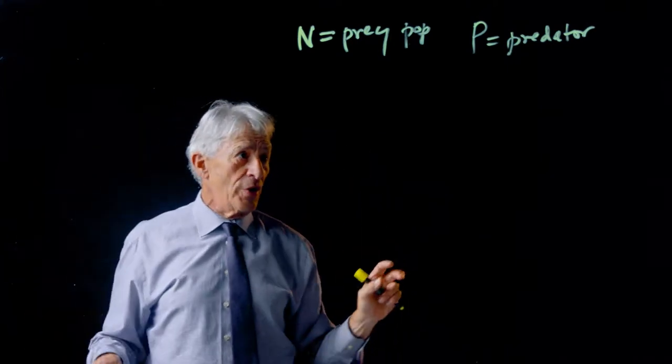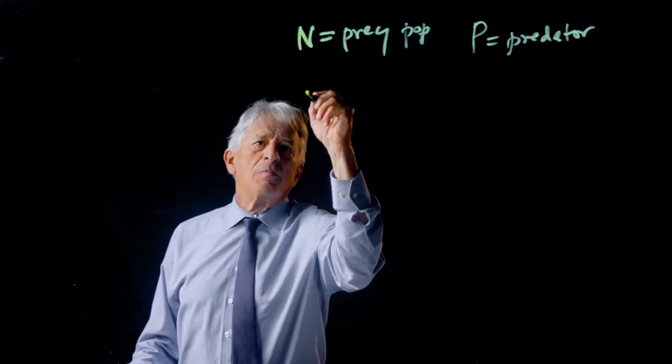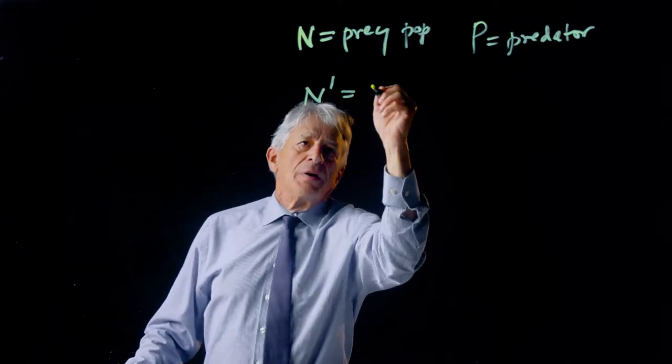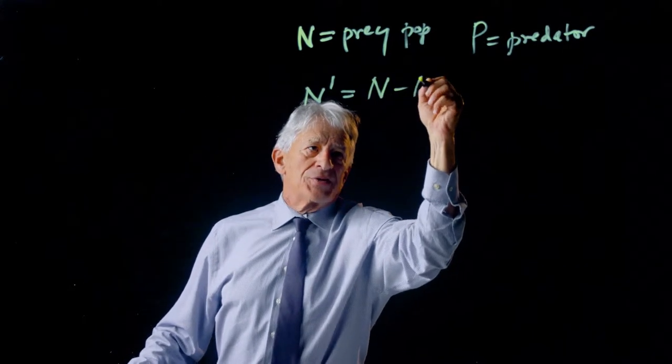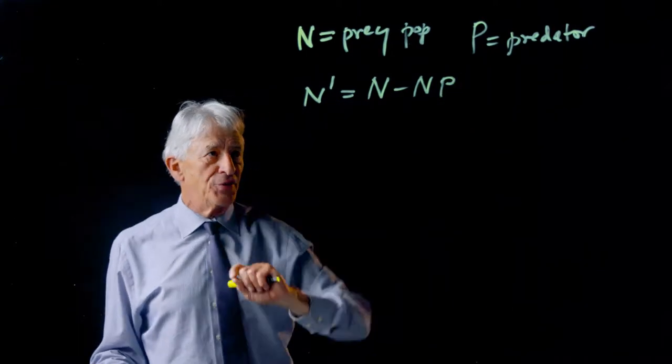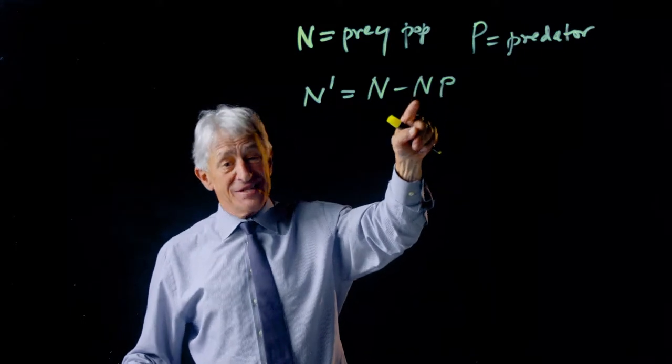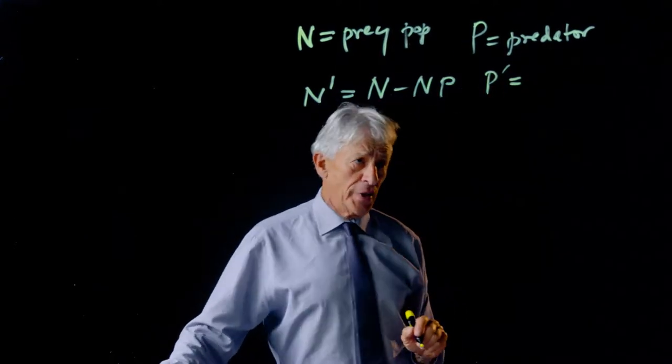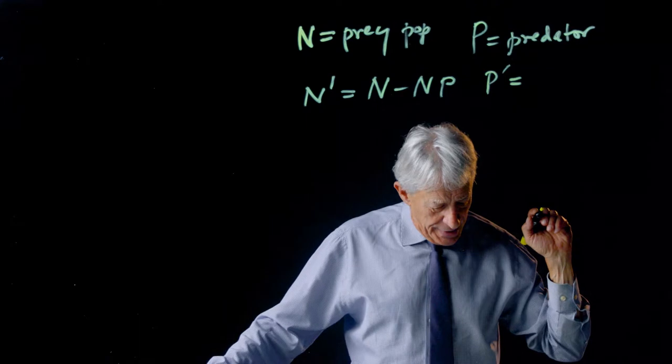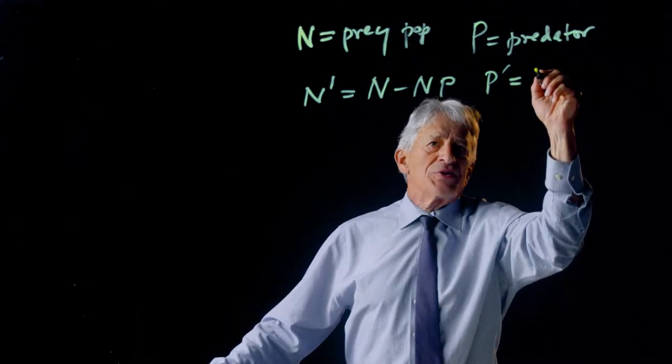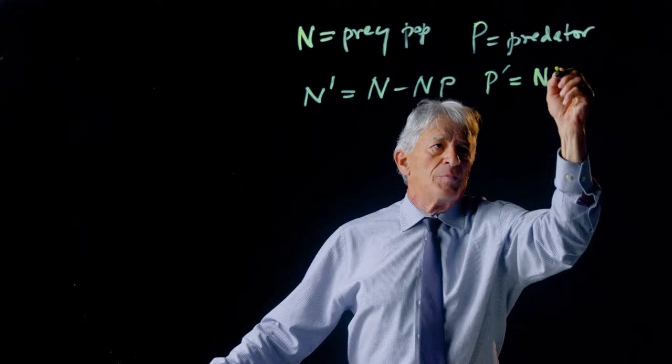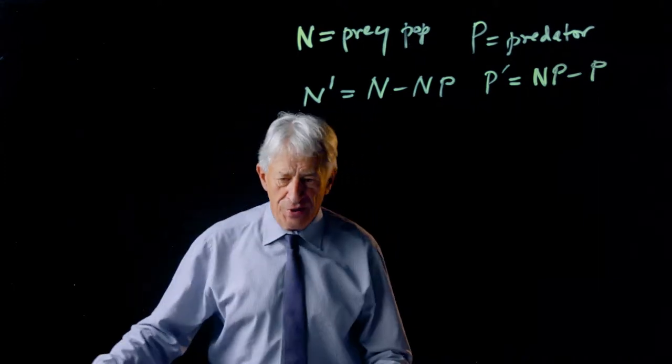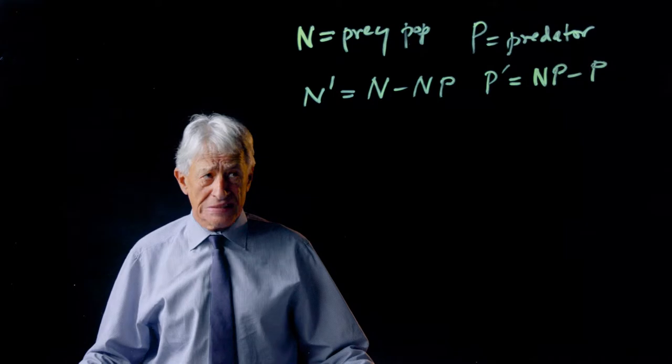So in this new terminology, the shark-tuna equations become N prime, which is the prey population, is equal to N minus NP, where this is the growth rate of the tuna, and this is the shark-meets-tuna term. And you recall P prime, which is the shark equation, is equal to plus NP minus P. So this was the shark-tuna equation. Of course, the fancy name is the Lotka-Volterra model.